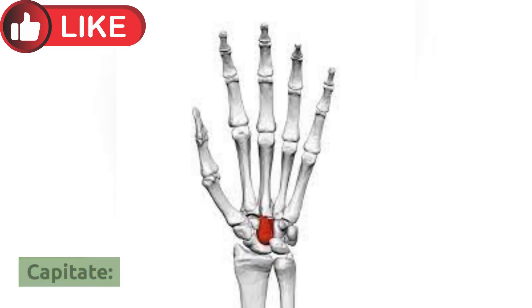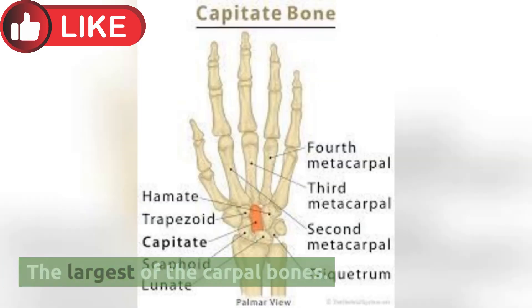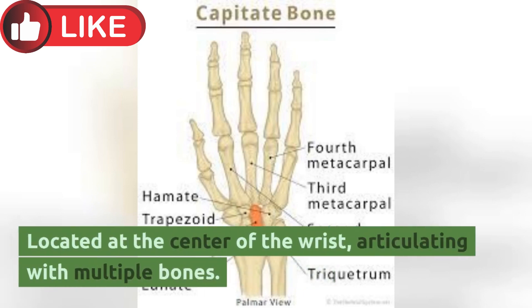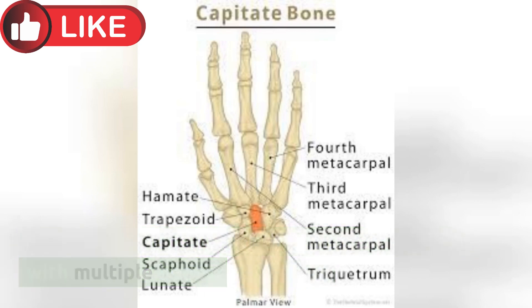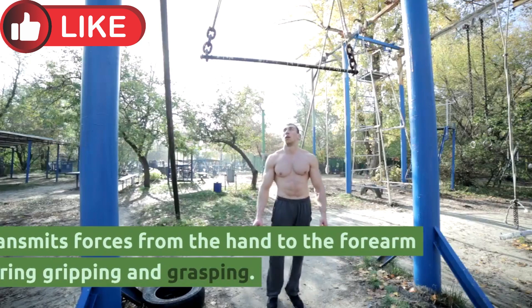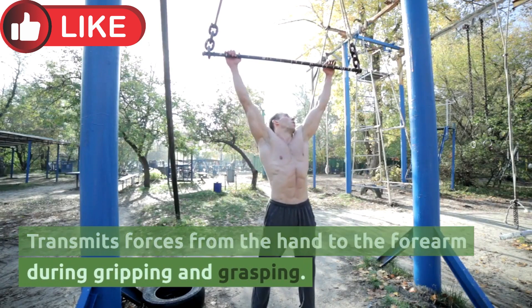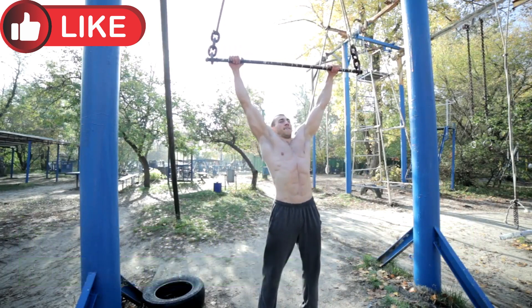Capitate: The largest of the carpal bones, located at the center of the wrist and articulating with multiple bones. It transmits forces from the hand to the forearm during gripping and grasping.